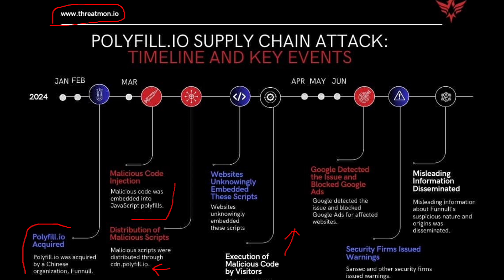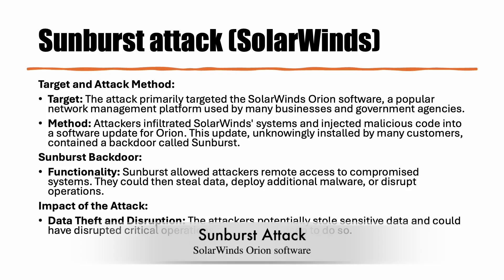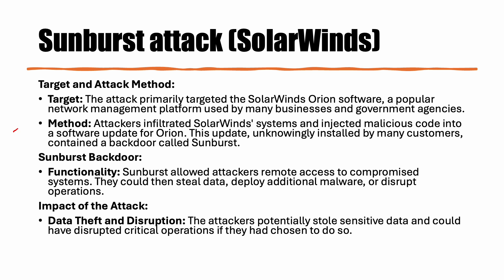The Sunburst attack primarily targeted the Orion software from SolarWinds, a popular network management platform used by many businesses and government agencies. The attackers infiltrated SolarWinds systems and injected malicious code into the software update for Orion. This update, unknowingly installed by many customers, contained a backdoor called Sunburst. A backdoor is an undocumented way for an attacker to gain access to a system, program, software, hardware, or network.